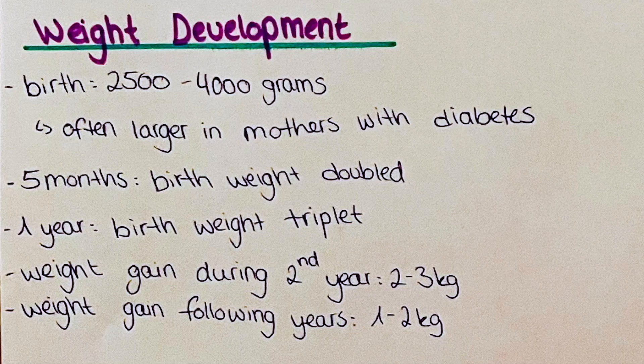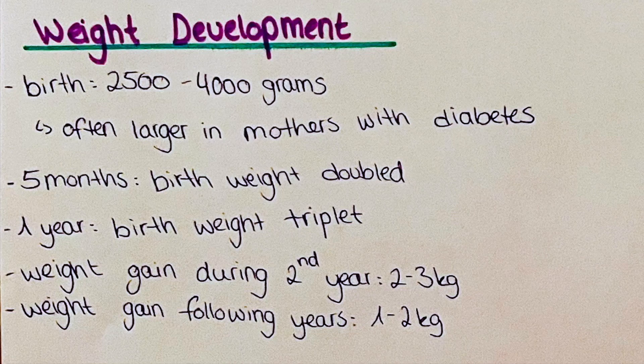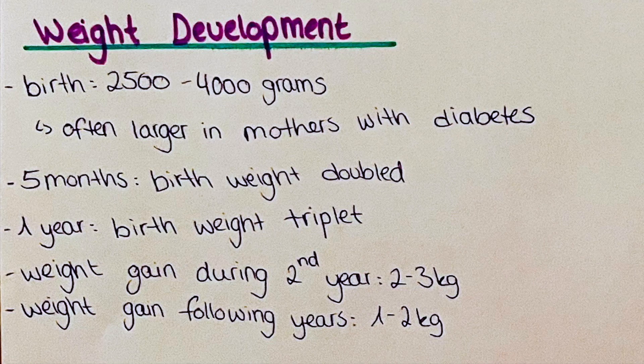Babies born to mothers with diabetes are often larger, a term we refer to as being born with macrosomia. This is when the baby is born with over 4 kilos. The average breastfed baby will actually double its weight by around 5 months to half a year. At around the one year mark, babies often triple their birth weight.